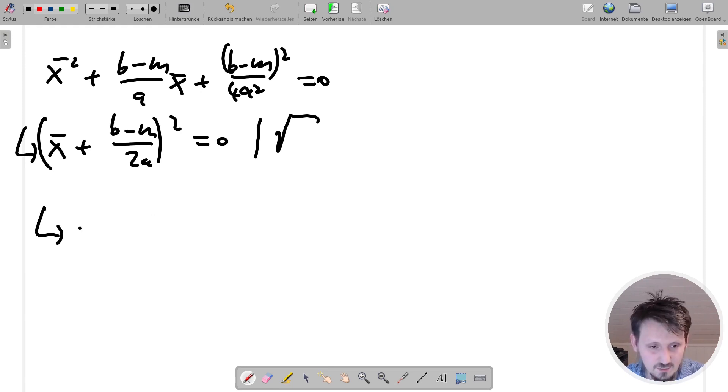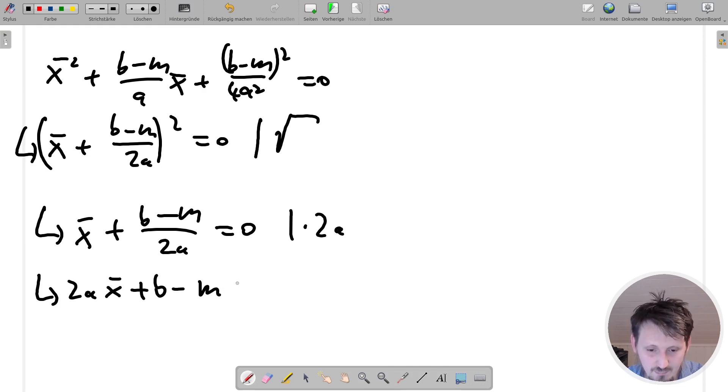Now we can multiply this with two A and this then leads to the result two A X bar plus M minus, plus B minus M equal to zero. And now we can at the end also add M or M here to bring M on the other side. And this then gives formula for M, which is given as two A X bar plus B now.